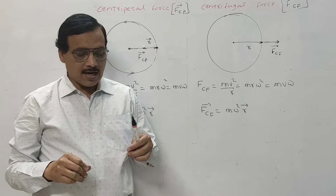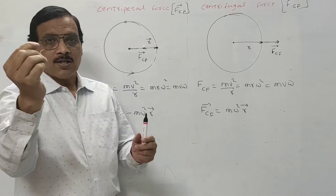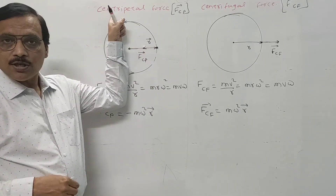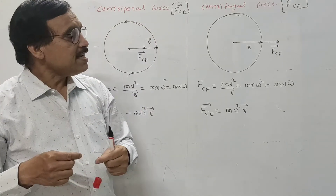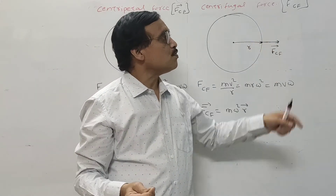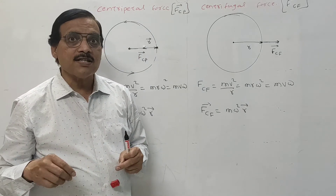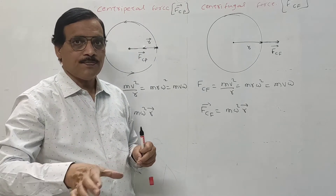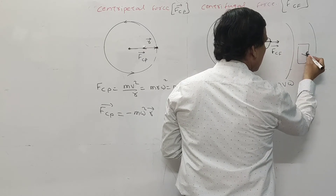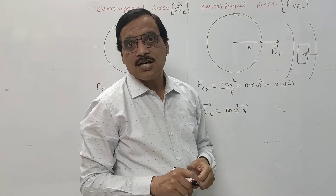For example, if you hold a body on a string and perform circular motion, the string pulls the body towards the center — that is centripetal force. The body tends to go outward — that force is centrifugal force. When you are in a bus and the bus takes a turn, you feel thrown outward — that outward force is centrifugal force.